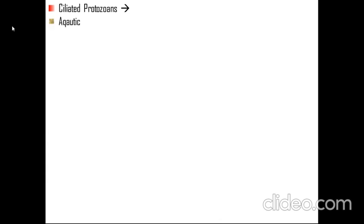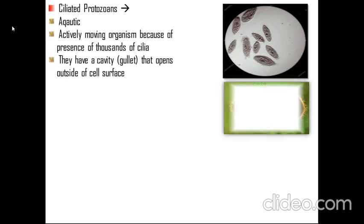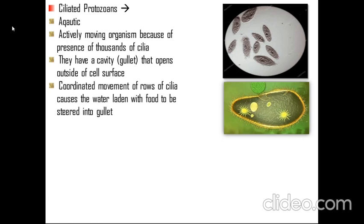The third type is ciliated protozoans. They are aquatic and actively moving organisms because of the presence of thousands of cilia. They have a cavity or gullet that opens to the outside of their cell surface. Coordinated movement of rows of cilia causes water laden with food to be steered into the gullet — this is how they feed themselves. An example is Paramecium.